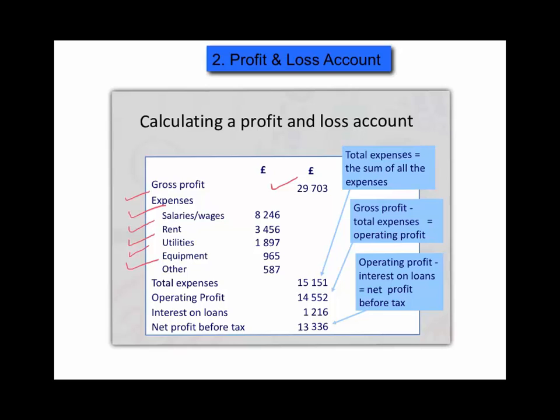Other expenses include utilities such as electricity bills, stationery, and other items which we sometimes call sundry expenses — such as coffee and tea for our customers. When we add together these expenses they come to fifteen thousand one hundred and fifty-one pounds. We simply take that amount in expenses away from our gross profit to give us what is known as the operating profit.